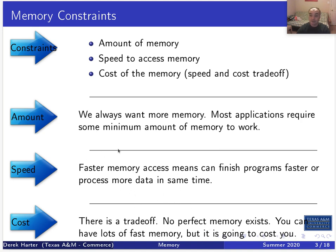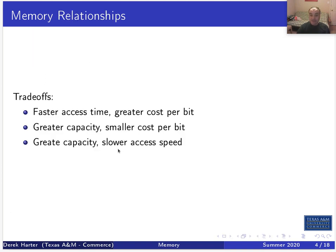So we can't get the perfect machine, because either we'd have to spend too much money to get memory that's as fast and as large as possible, or we have to make trade-offs. The key relationships are: faster access time means greater cost per bit, and bigger capacity means smaller cost per bit.